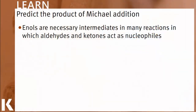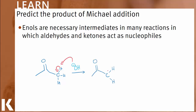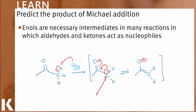As discussed in previous lessons, enols are reactive intermediates that are characterized by an alkene and an alcohol. They are formed by extracting a proton from a carbonyl-containing compound using a strong base, allowing for the reduction of the carbonyl to form an alcohol and alkene. Normally we'd consider the carbonyl carbon in aldehydes and ketones to be an electrophile, but enol formation allows for the formation of an enolate carbanion, which is a great nucleophile.